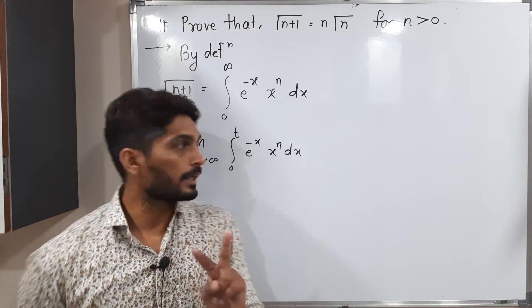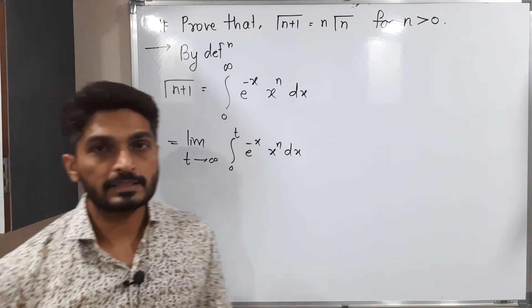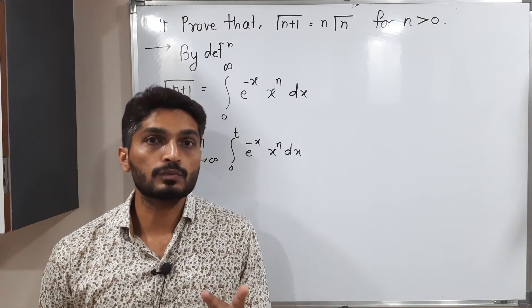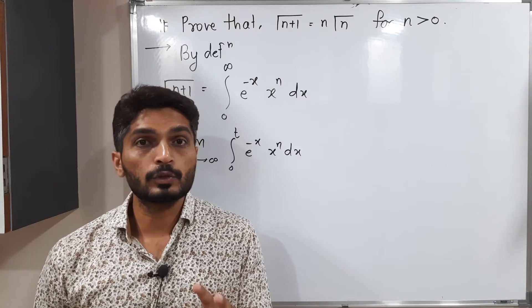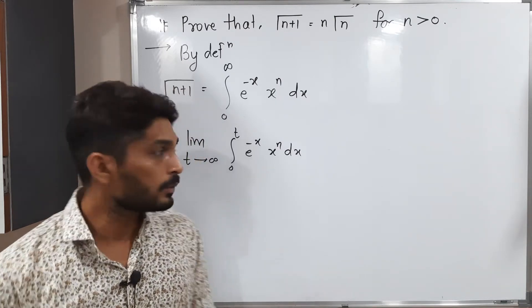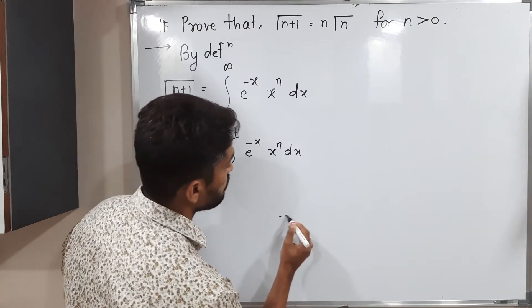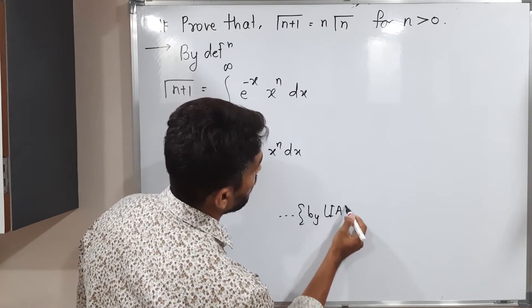Here we have two variables. Two functions: e raised to minus x and x raised to n. So these two functions, we have a product between them and we have to find its integration. So that means I have to use integration u into v formula. So for that we need to arrange those functions by rule LIATE.